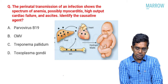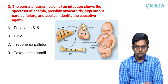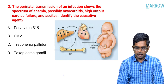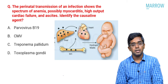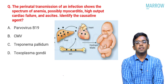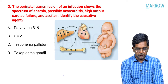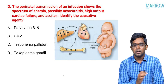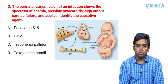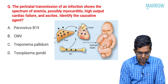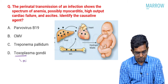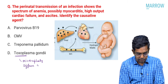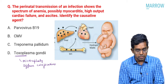Moving to the next question: the perinatal transmission of an infection shows a spectrum of anemia, possibly myocarditis, high-output cardiac failure, and ascites — with a picture showing affected bone, liver, and heart, and the baby fully swollen — hydrops fetalis. Identify the causative agent: parvovirus B19, CMV, Treponema pallidum, or Toxoplasma gondii. Toxoplasma gondii is characterized by microcephaly and diffuse brain calcifications — not the picture given. Treponema pallidum (syphilis) features persistent rhinorrhea, bone inflammation with intense pain, and vesicular rash — also not the picture.